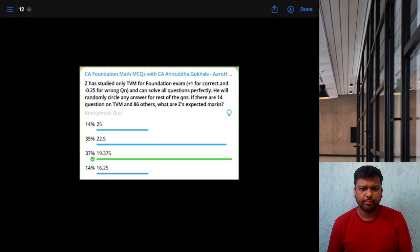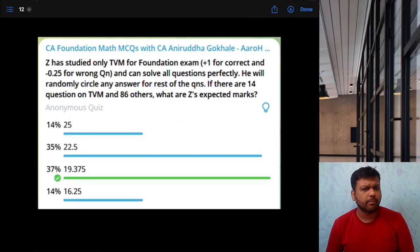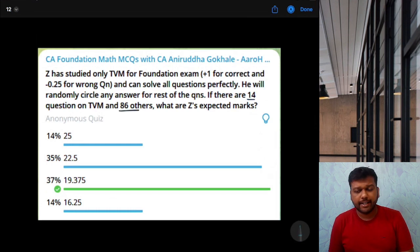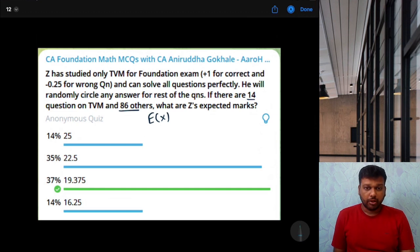Next. Z has studied only TVM questions for foundation exam. Plus 1 for correct and minus 0.25 for wrong question. And can solve all questions perfectly. He will randomly circle any answer for rest of the questions. If there are 14 questions on TVM and 86 other questions, what are Z's expected marks?